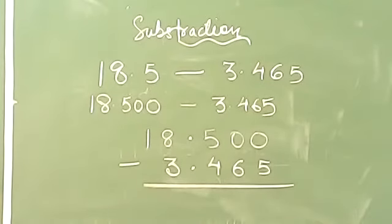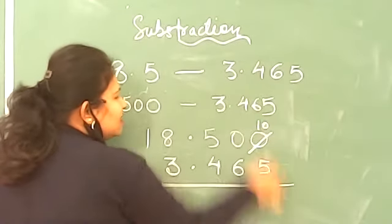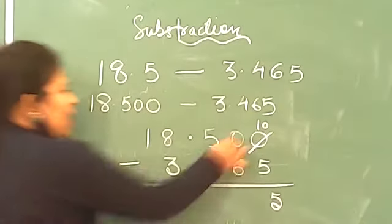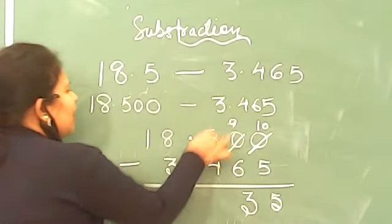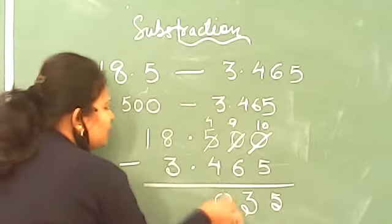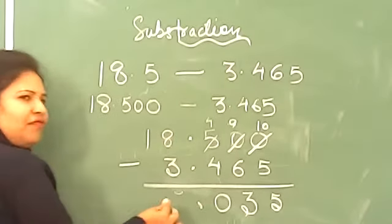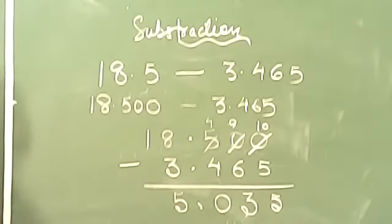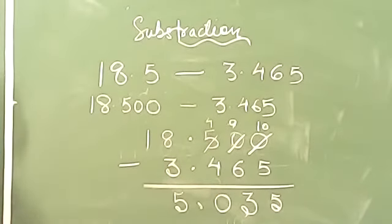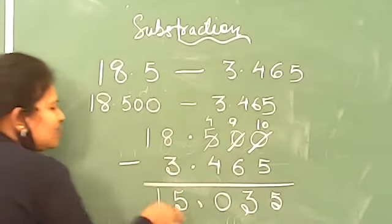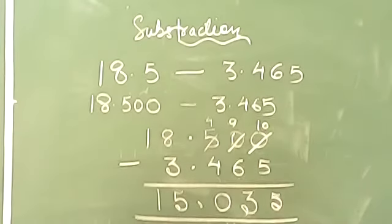Now let's subtract. 0 minus 5, will it be possible? No. 10 minus 5 would be 5. Now 9 minus 6, it would be 3. Now 4 minus 4, it would be 0. Now let's come here. 8 minus 3 is 5. You can give borrow. There is no requirement of borrow. So this is 8 minus 3 would give us 5 and 1 means 1. So our answer should be 15.035 in the answer.